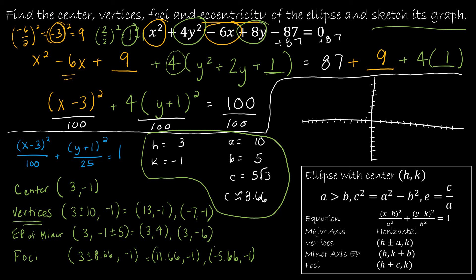So, using the center at 3 negative 1, the vertices at 13 negative 1 and negative 7 negative 1. Aren't you glad you get to listen to me count? And then the endpoints of the minor axis are 3, 4, and 3 negative 6. That's about what my values will look like.